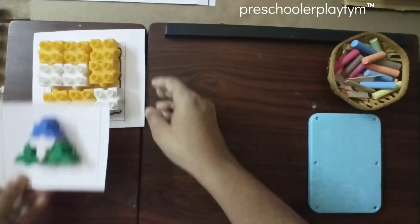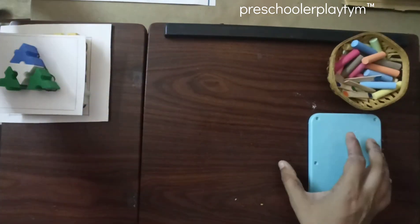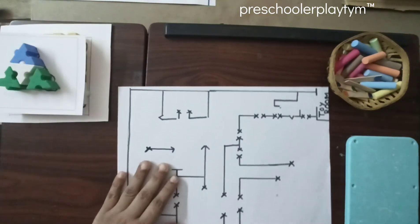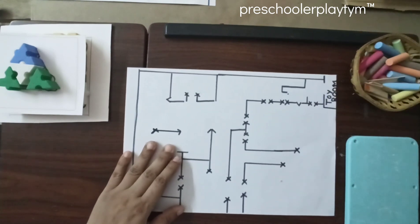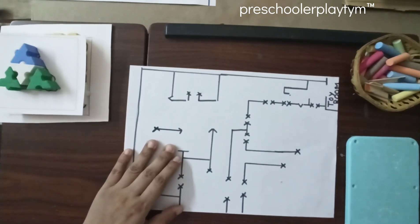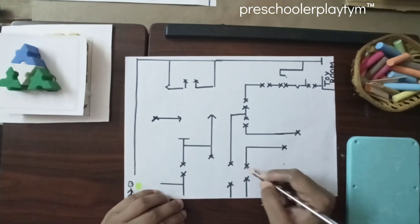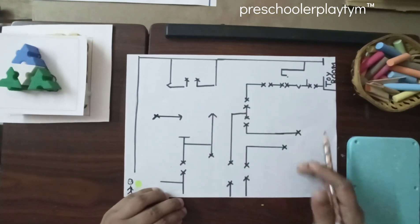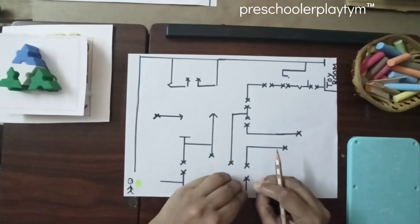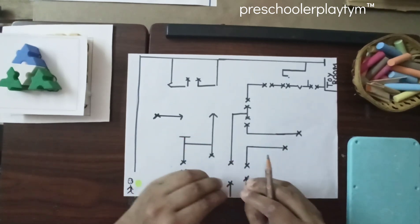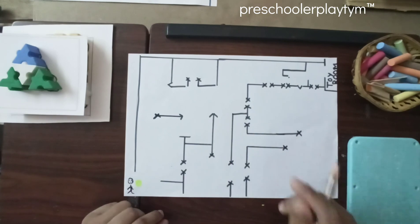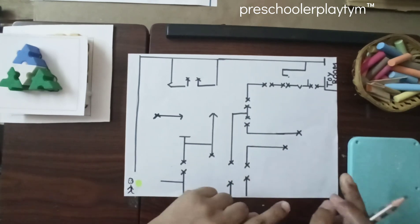My third activity is a maze activity, but my style maze activity, where I have tried a little different manner. If you see, I have made these little crosses. These crosses are signs for the kid to know that they are not supposed to enter this side. That's the wrong way.